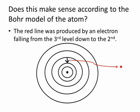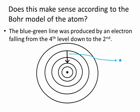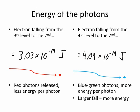Let's see how this makes sense with the Bohr model — those circles represent the energy levels. The red line of the hydrogen spectrum is produced by electrons falling from level 3 down to level 2. Every electron that falls releases one photon of red light. The blue-green light is caused by electrons falling from the 4th level down to the 2nd level. It's a further fall, so there's a different amount of energy, a different frequency, a different wavelength, and a different color. The energy of the red light is less than the energy of the blue-green light — since the electrons fell further, the energy they release is greater. Larger fall, more energy.